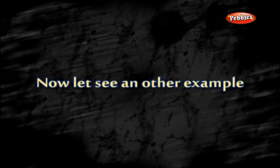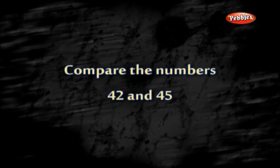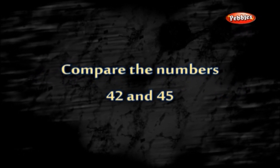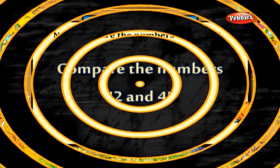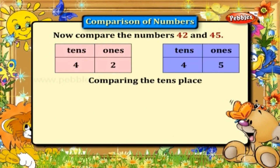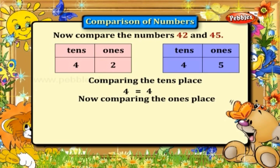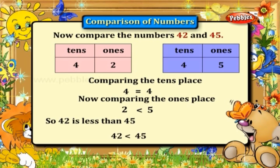Now let's see another example. Compare the numbers 42 and 45. We see that in both numbers, 4 is in the tens place. So we now have to compare the numbers in the ones place. In 42, 2 is in the ones place, and in 45, 5 is in the ones place. So 2 is less than 5. Therefore 42 is less than 45.